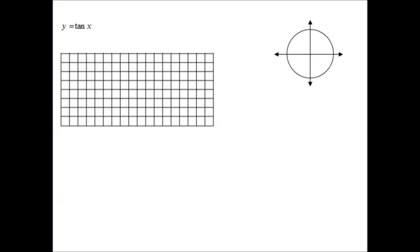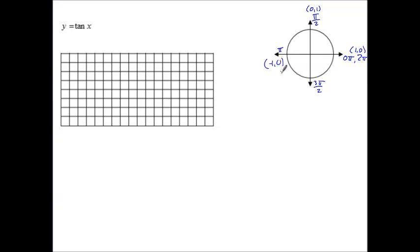Let's go back to our unit circle and put all our measurements in radians, starting with 0, then pi over 2, pi, 3 pi over 2, and back to the beginning at 2 pi. The coordinates of these points are (1, 0), (0, 1), (-1, 0), and (0, -1).